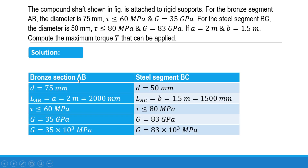For the bronze section AB: diameter is 75 mm, length is 2000 mm, allowable shear stress is 60 MPa, and G is 35 GPa (35 × 10³ MPa). For the steel segment BC: diameter is 50 mm, length is 1500 mm, allowable shear stress is 80 MPa, and G is 83 GPa.